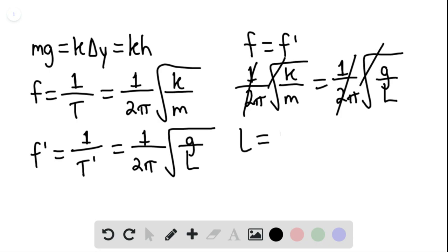L, the length would be the mass times the gravity or the weight divided by the spring constant. This would be equal to kh, again due to Newton's second law and Hooke's law, divided by k, and so L would be equal to h, and this would be equal to 2.00 centimeters for the length of the pendulum.